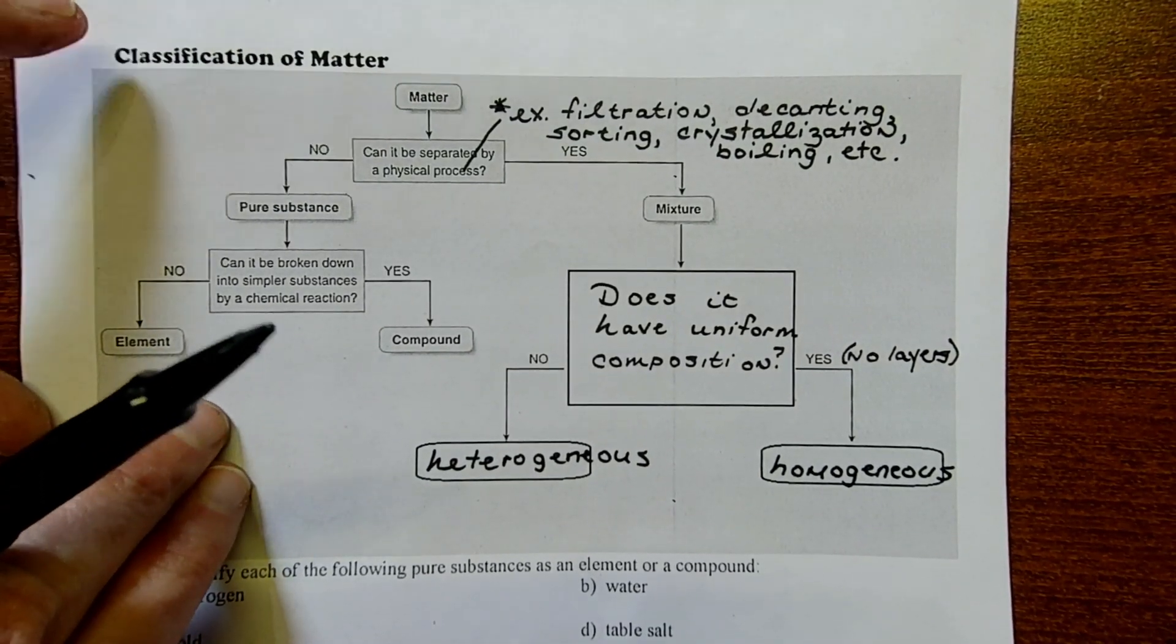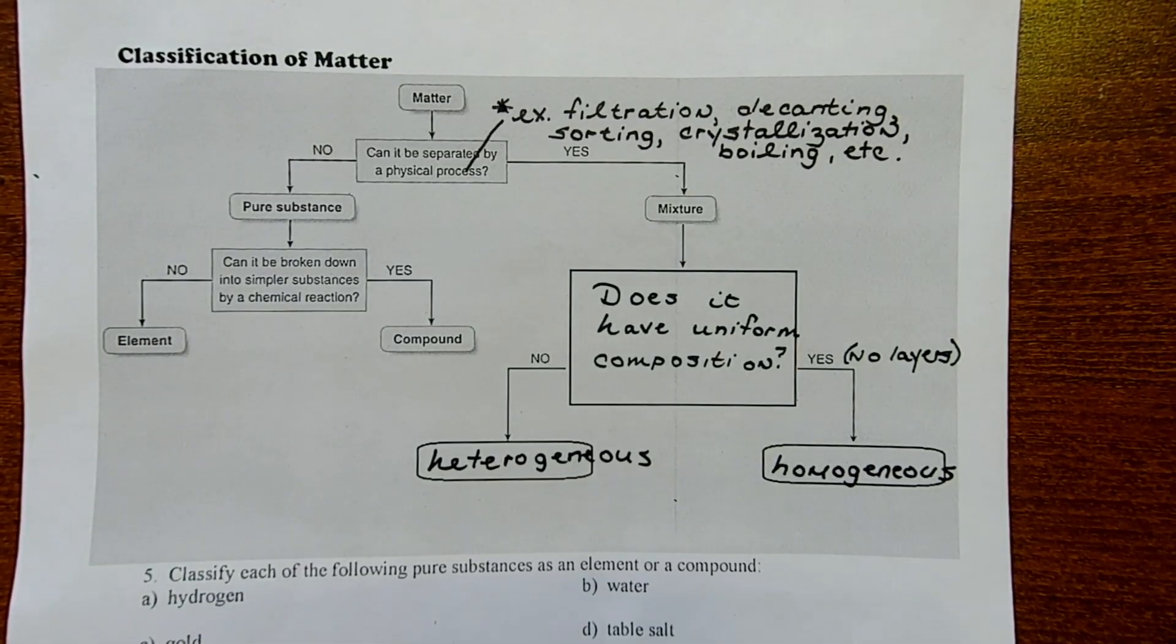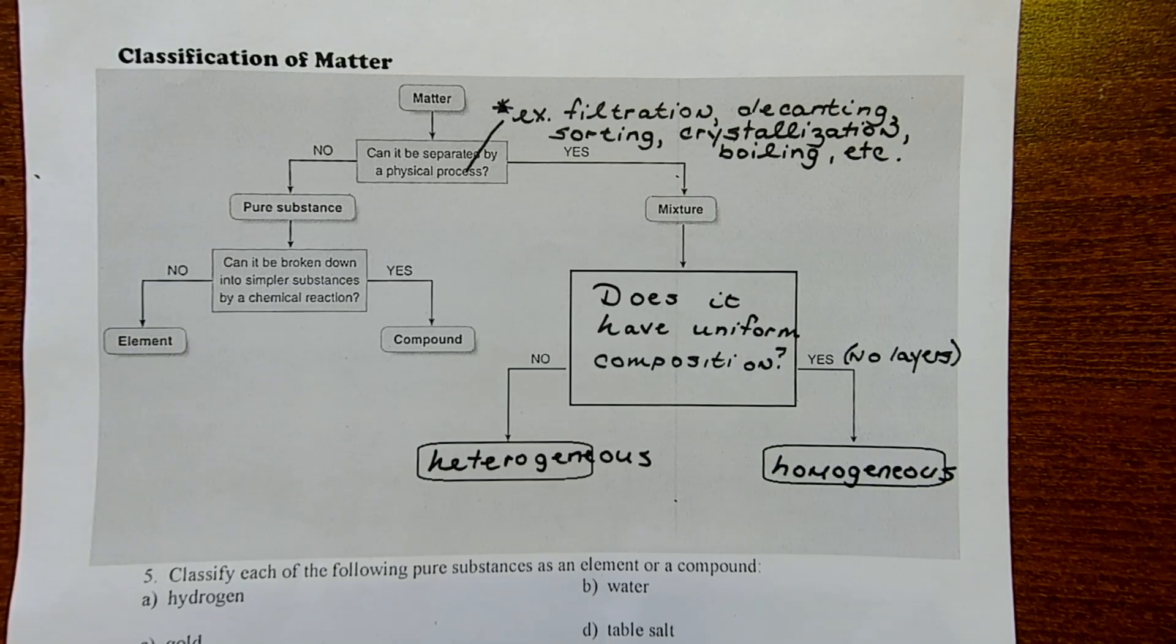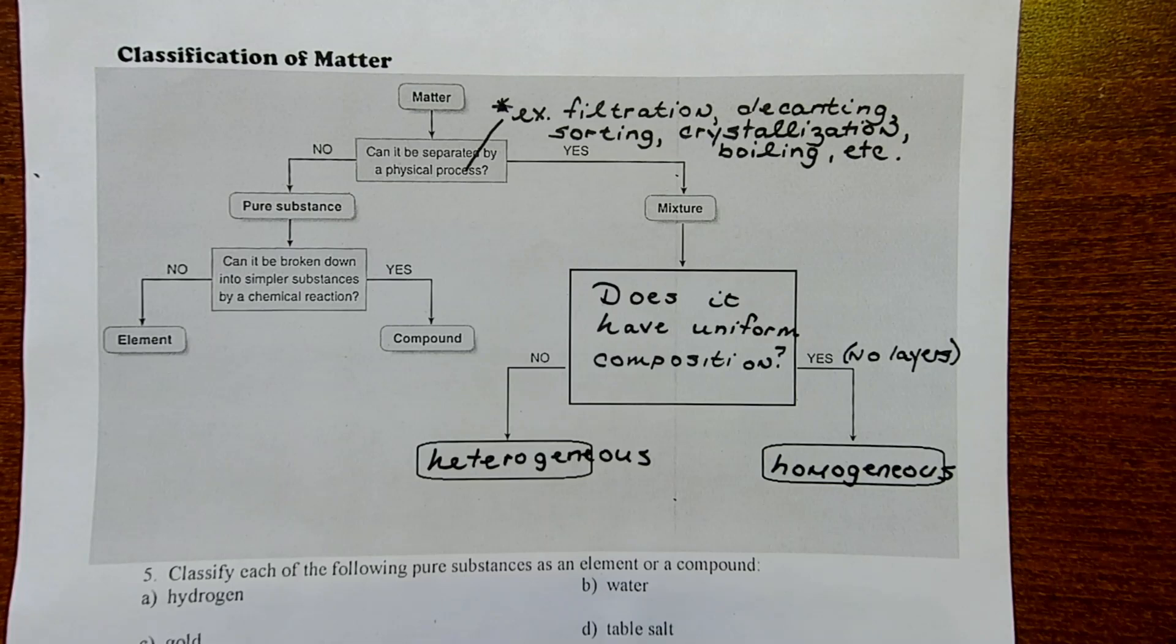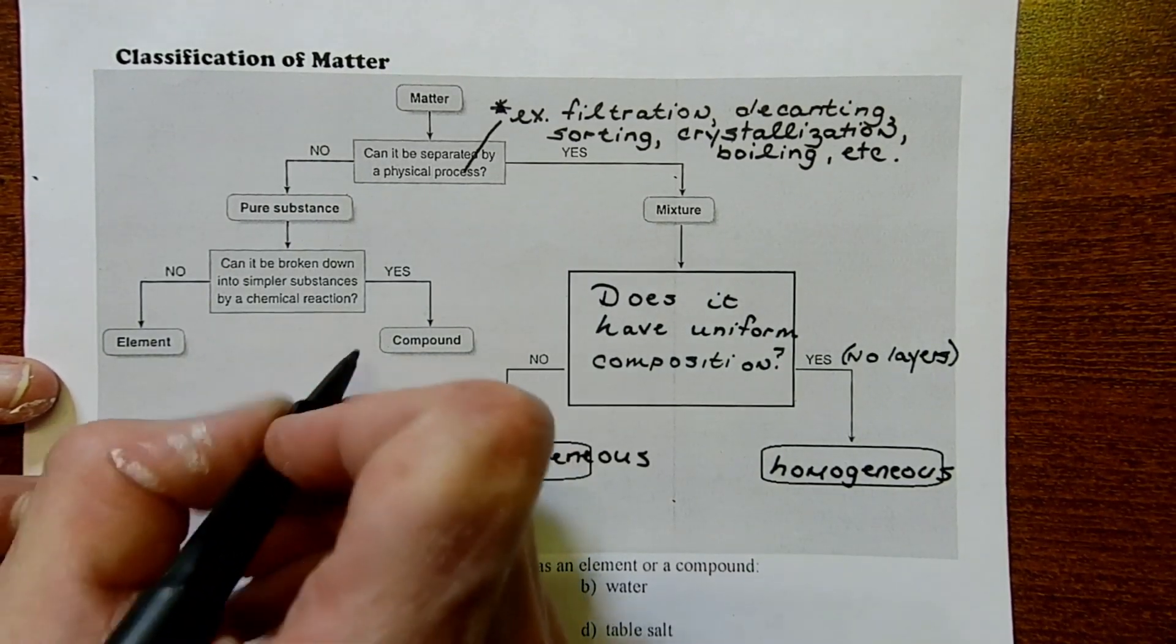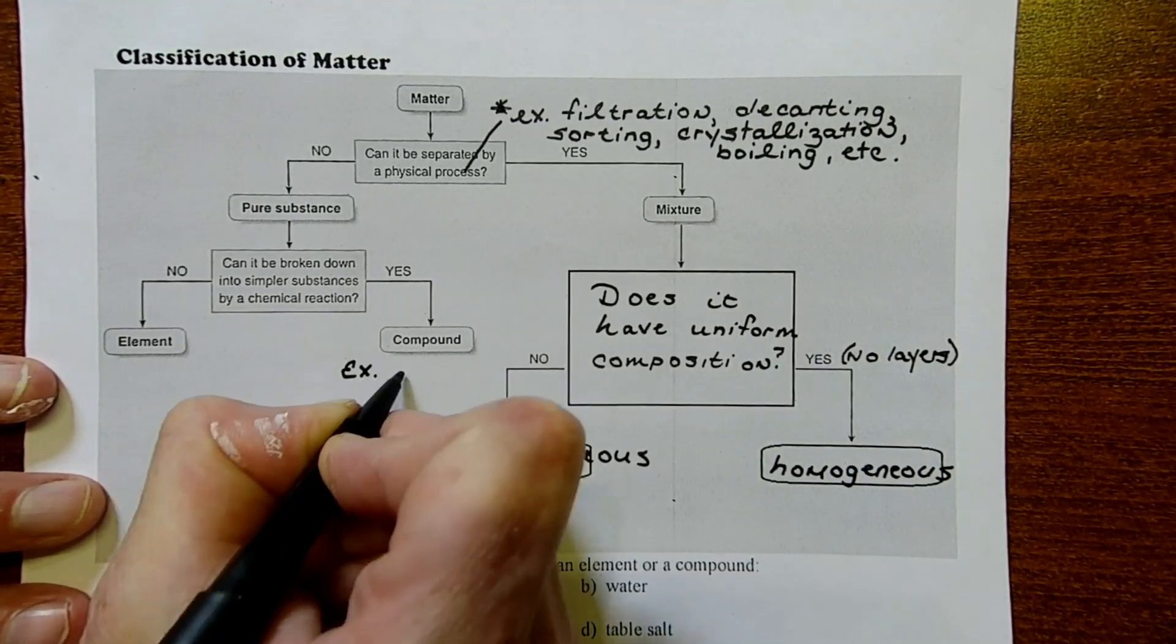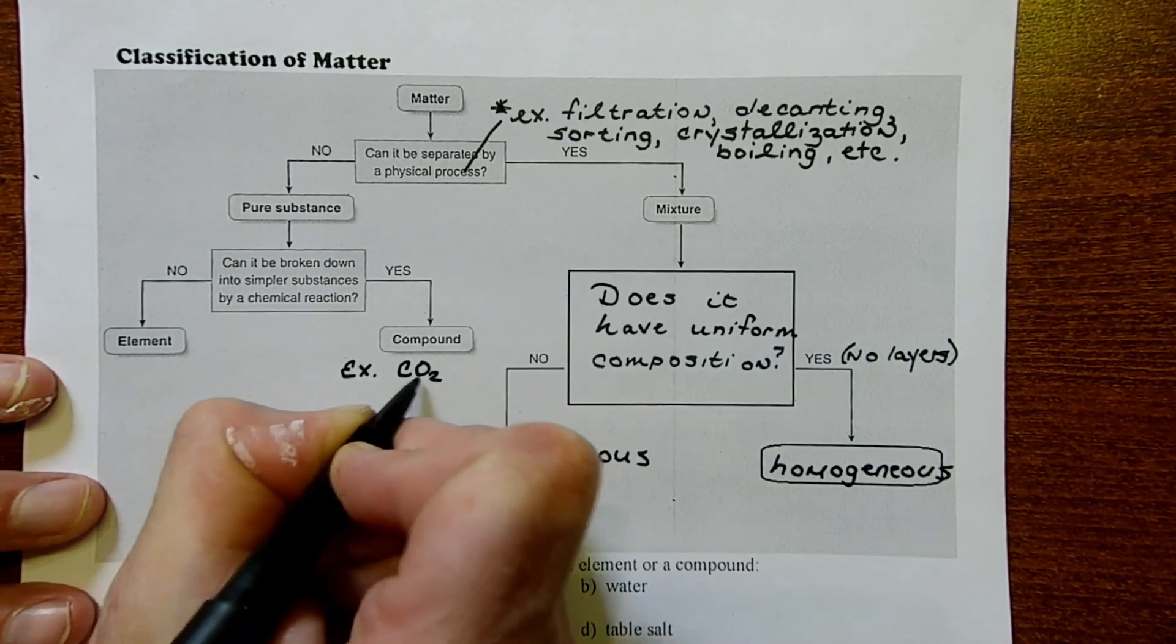Pure substances can be broken down into two categories. We have to ask ourselves, can it be broken down by a chemical reaction? If the answer is yes, then we're looking at a compound. A compound is something that's composed of two or more atoms. So compounds have formulas like carbon dioxide, CO2.